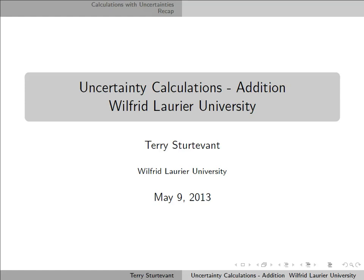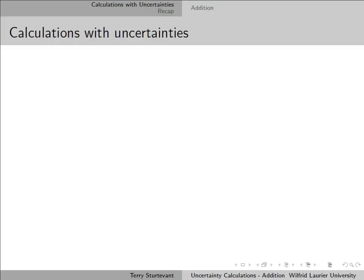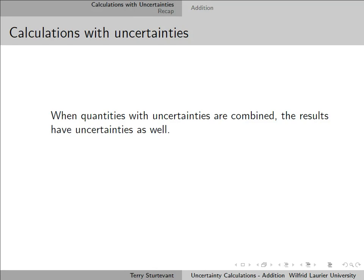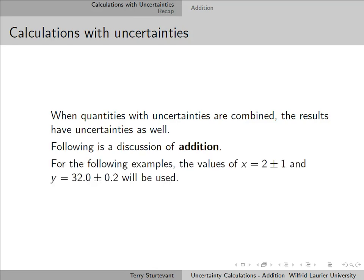This document is about adding with uncertainties. When quantities with uncertainties are combined, the results have uncertainties as well. This is going to discuss addition, and for the examples, the quantities we're going to use are x, which has a value of 2 plus or minus 1, and y, which has a value of 32 plus or minus 0.2.